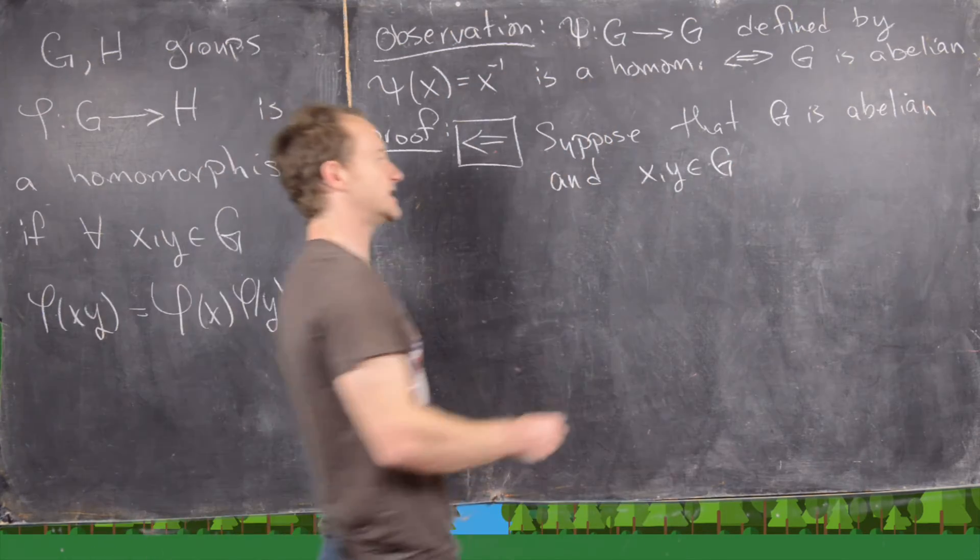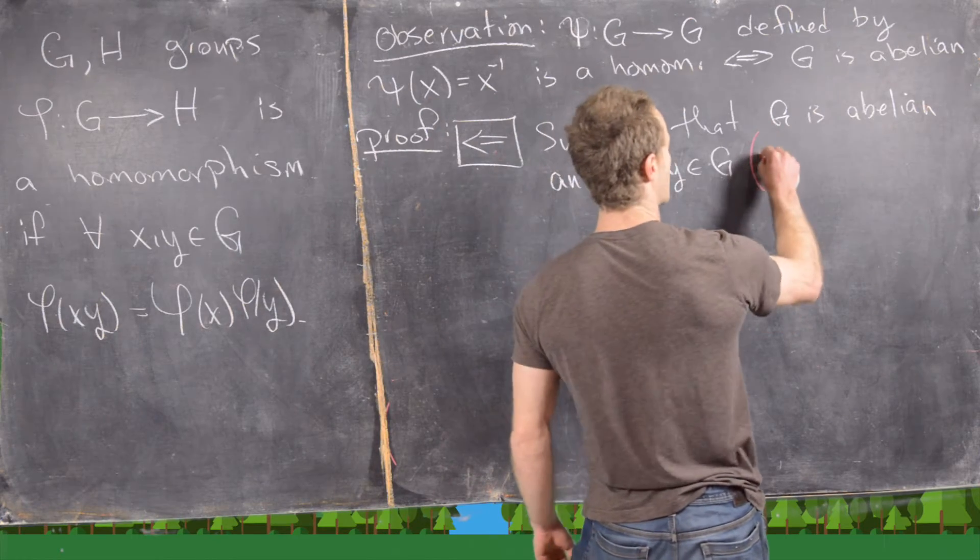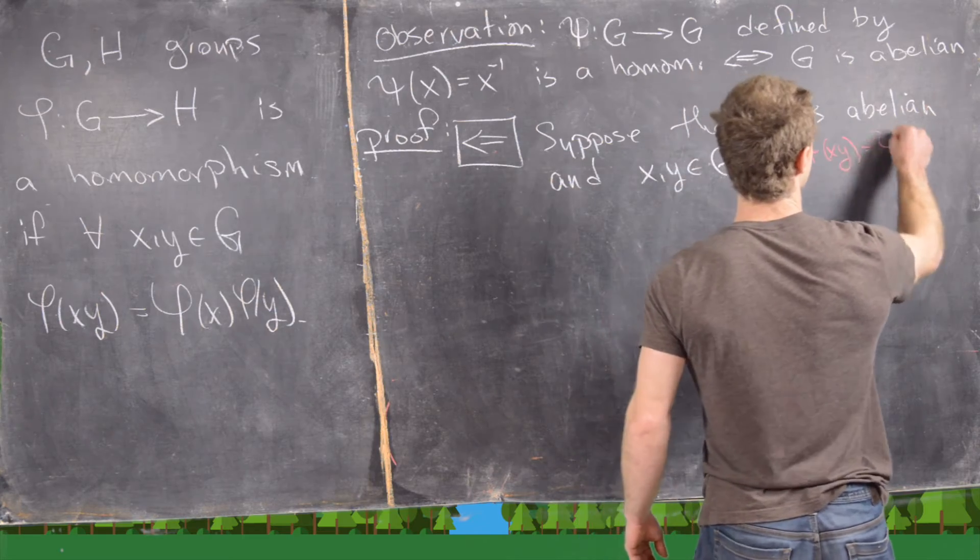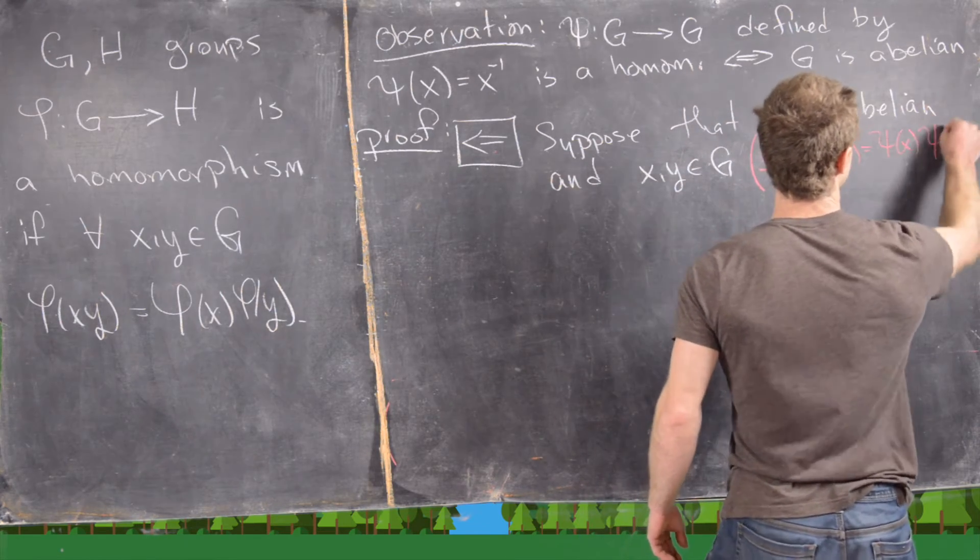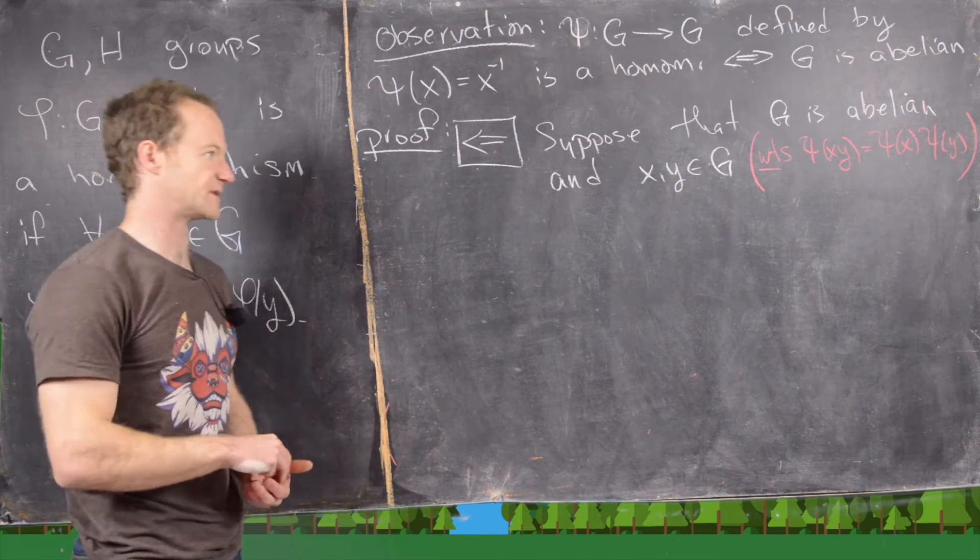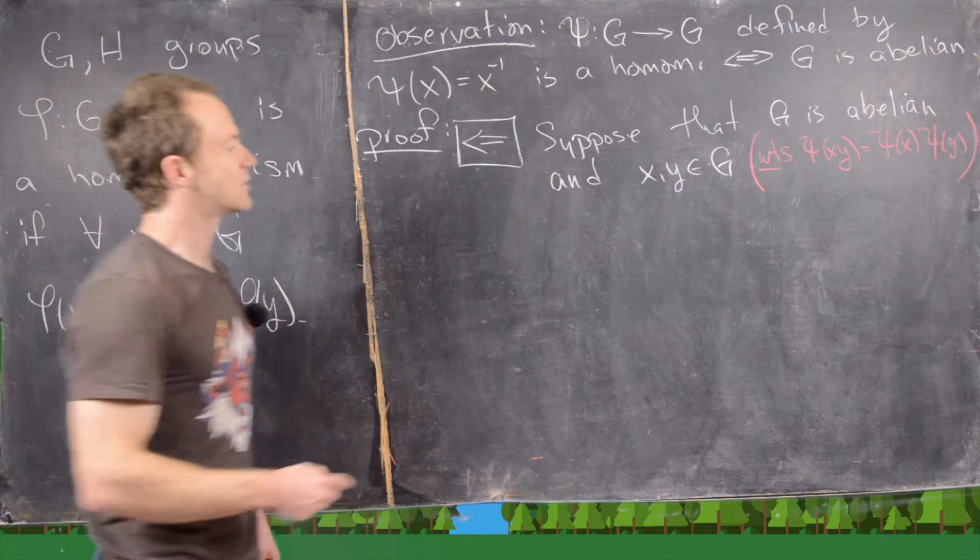Just recall where we want to get, we want to get to the point where we have psi of xy equals psi of x times psi of y. That will prove that this function is a homomorphism. So that's what we're trying to get to.